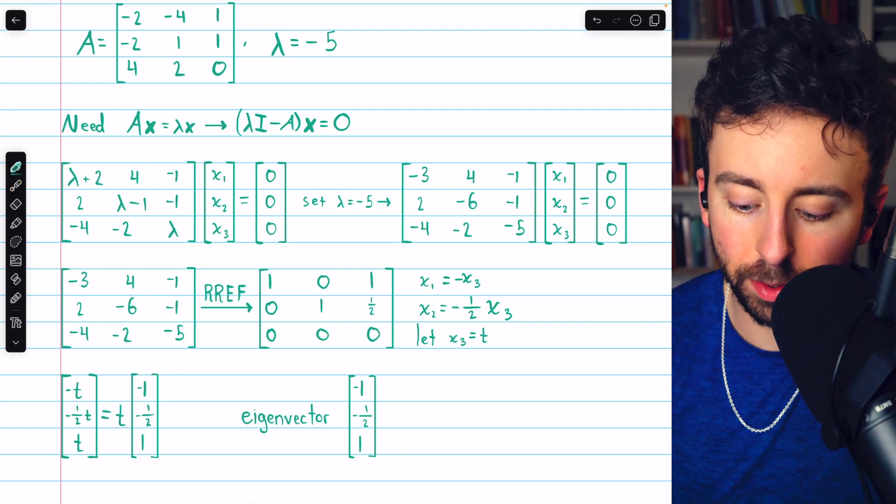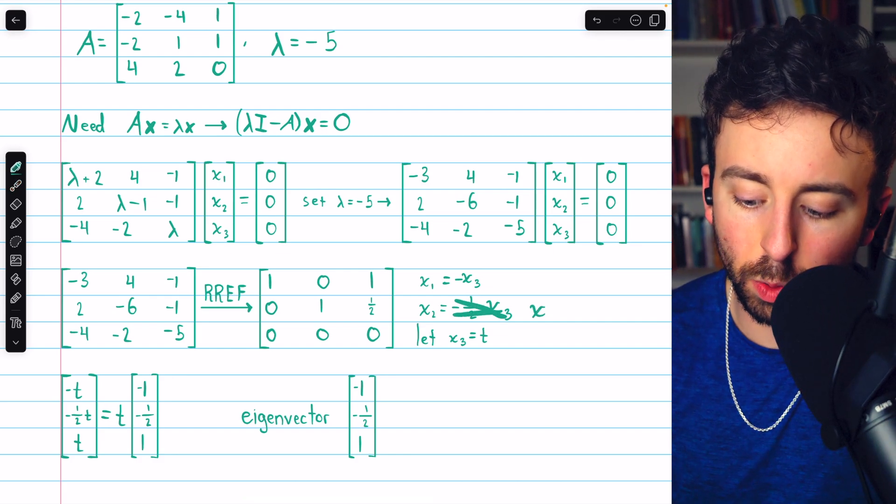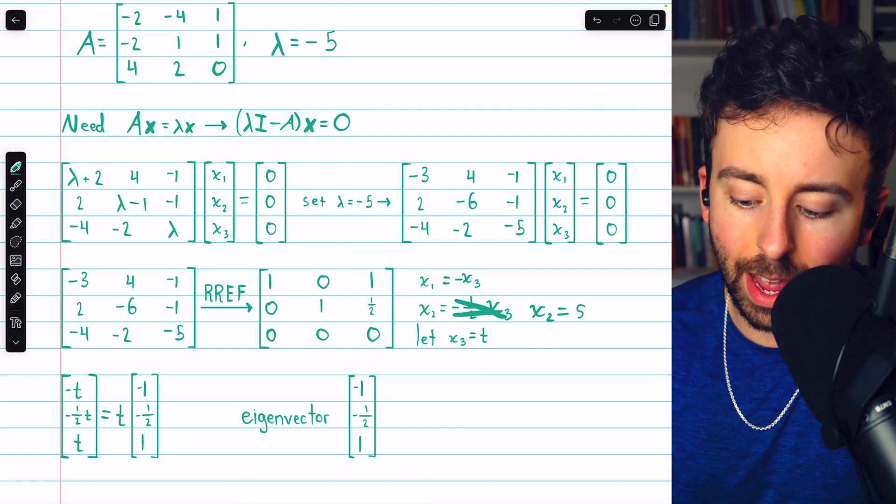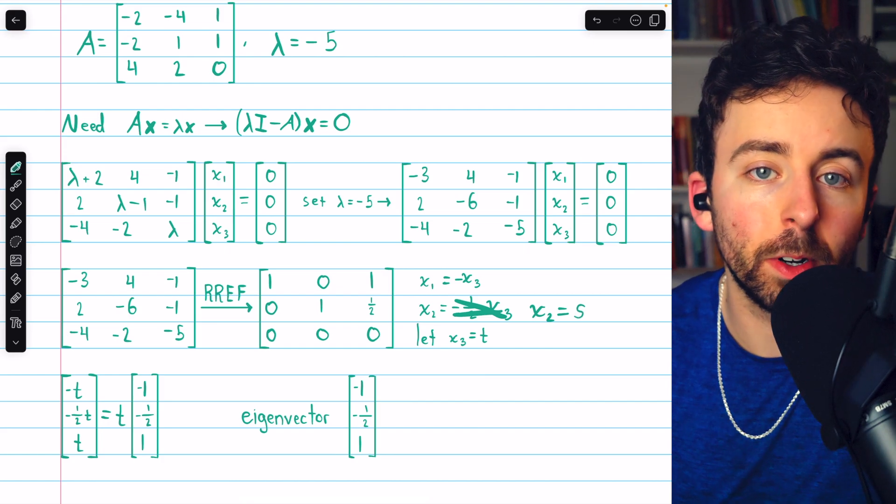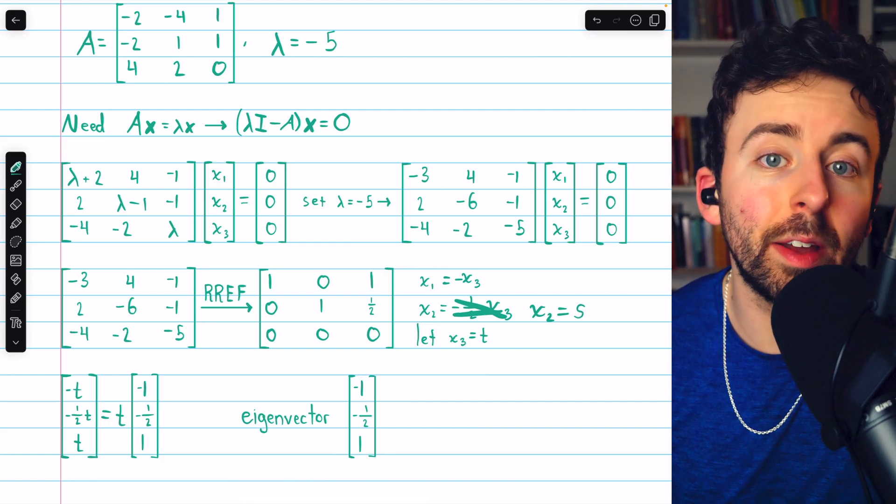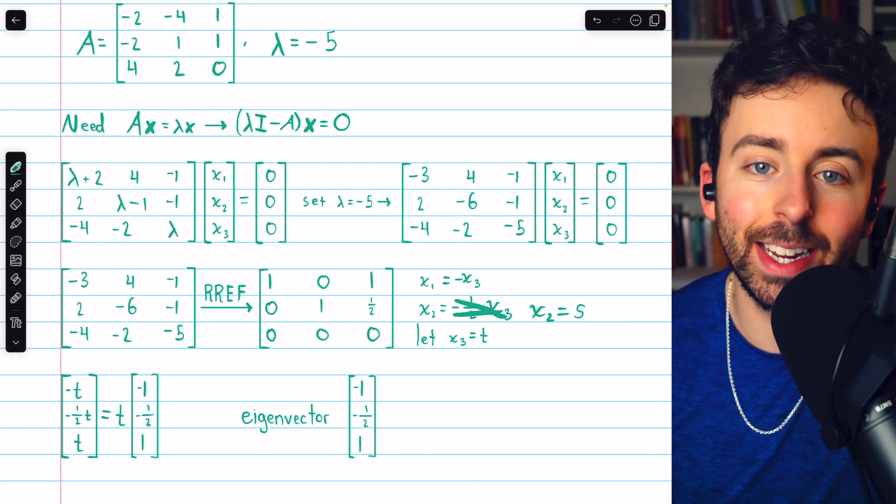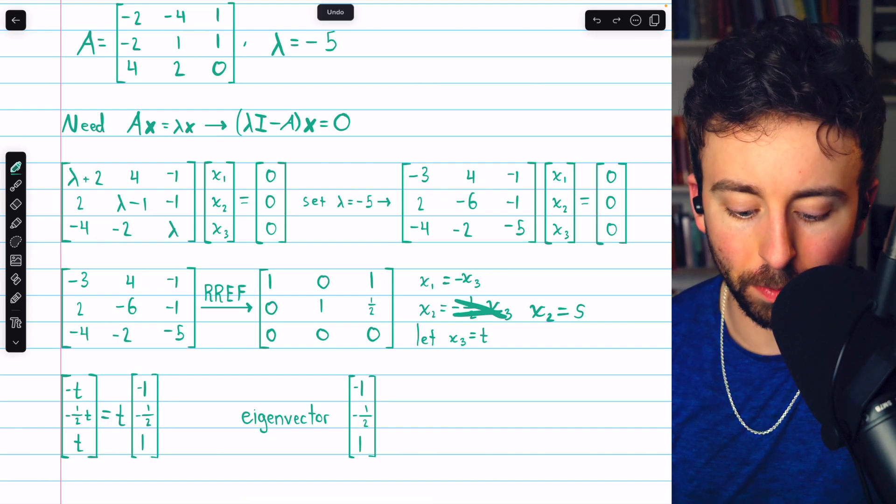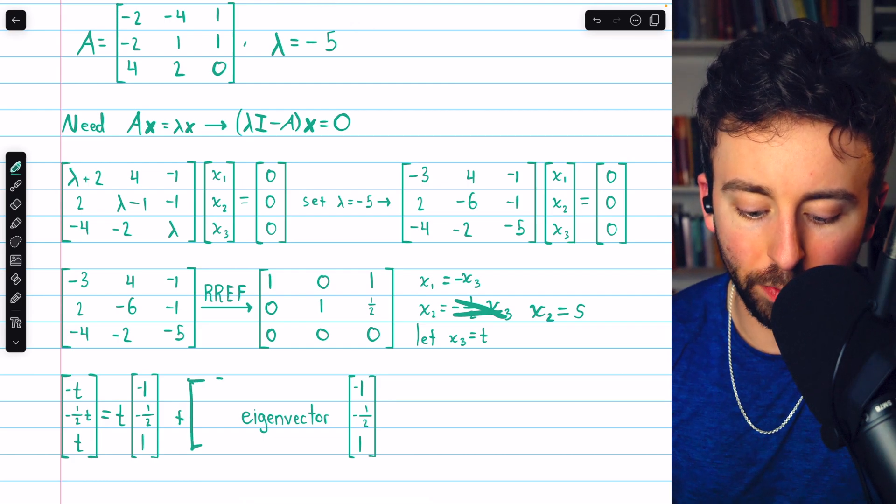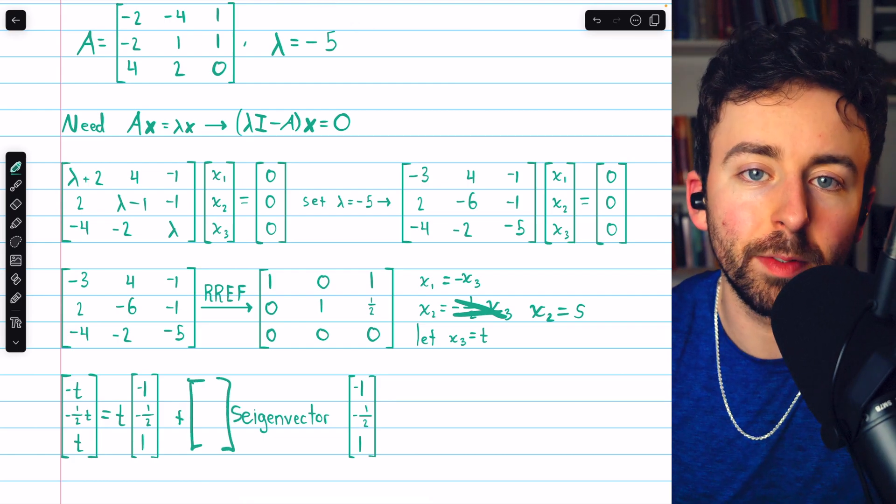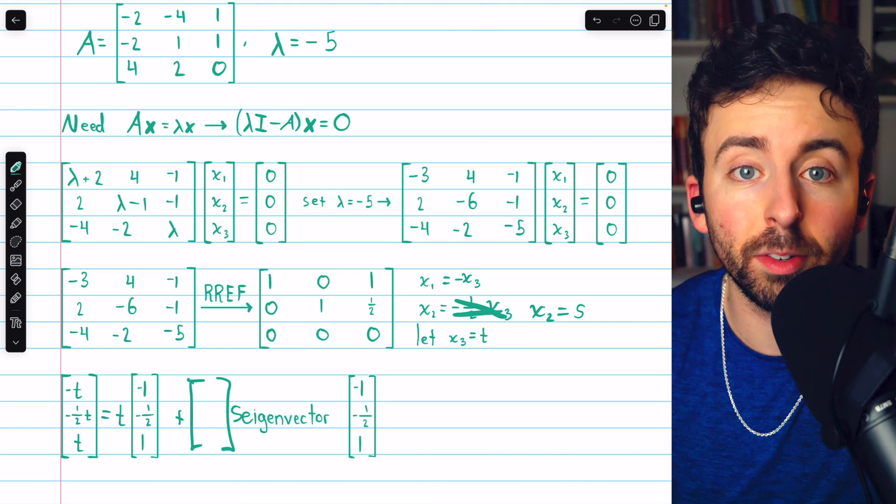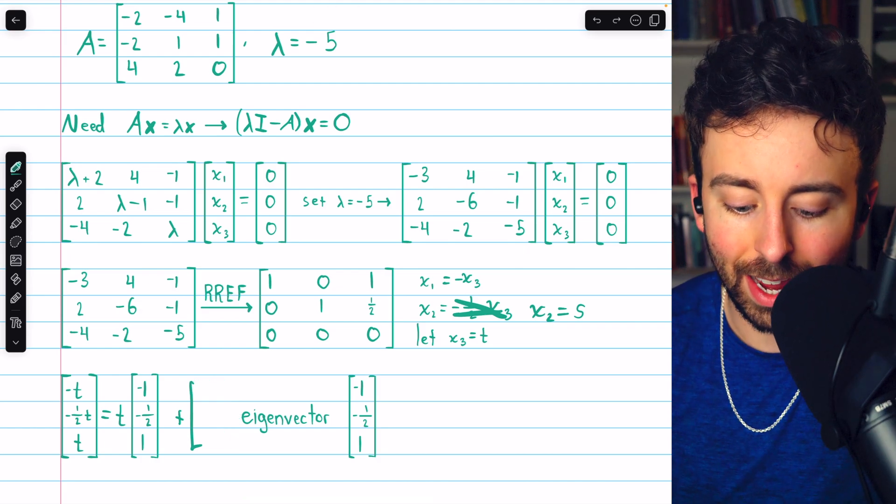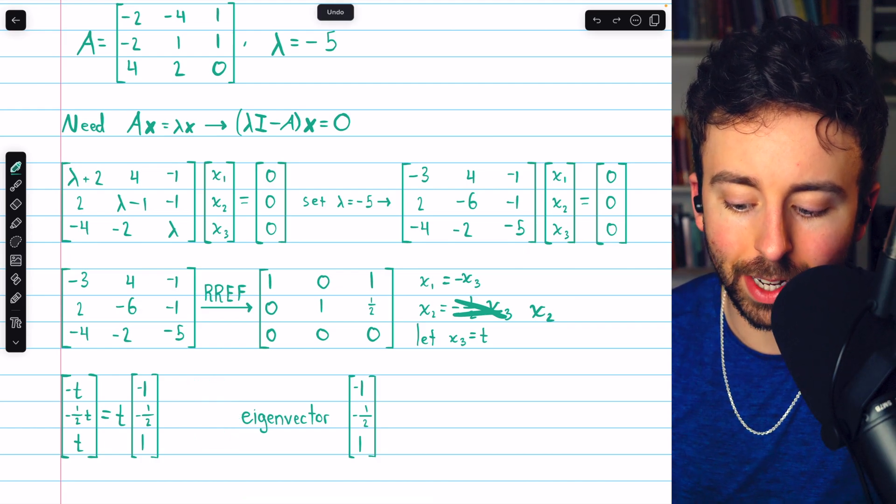If we had multiple free variables, like for example, if x2 was also free, we would set x2 equal to some other parameter, like s. And then we would have two linearly independent eigenvectors. We'd have the coefficients of t in one eigenvector, and then we would have the coefficients of s in a different eigenvector. That situation is definitely possible. These two examples just had a single linearly independent eigenvector.